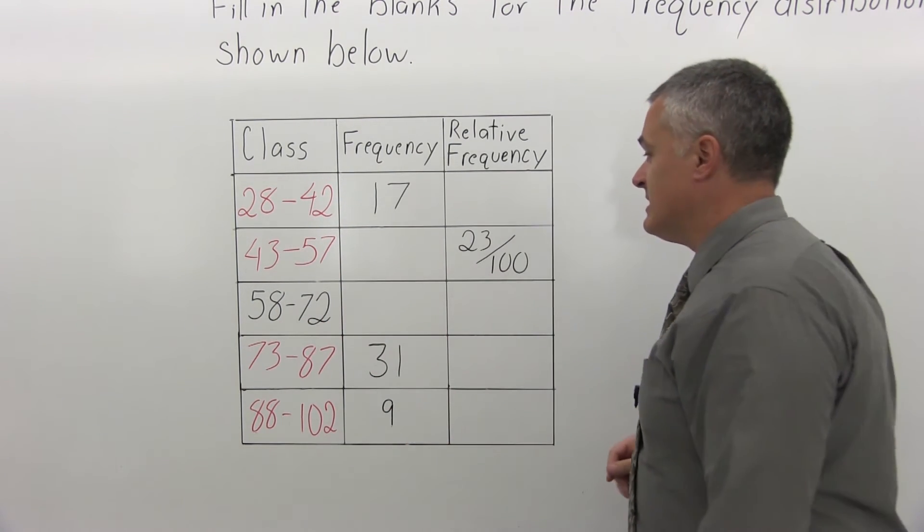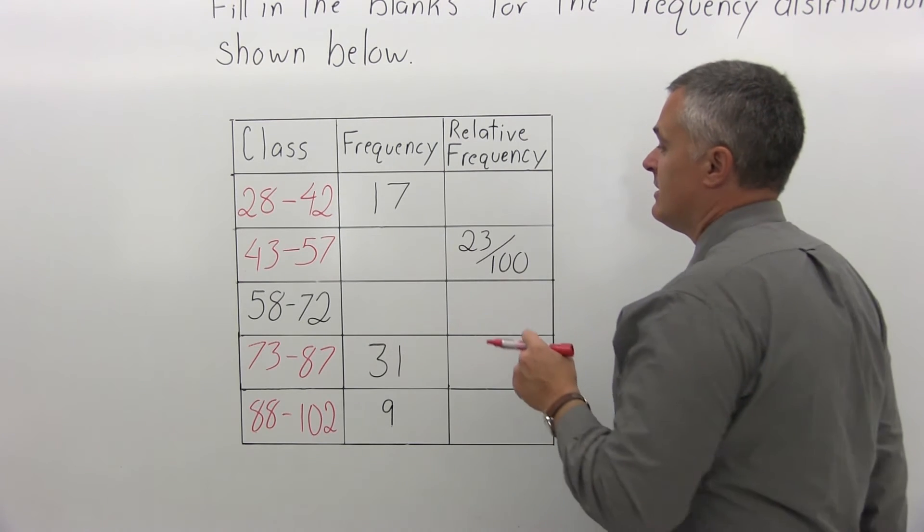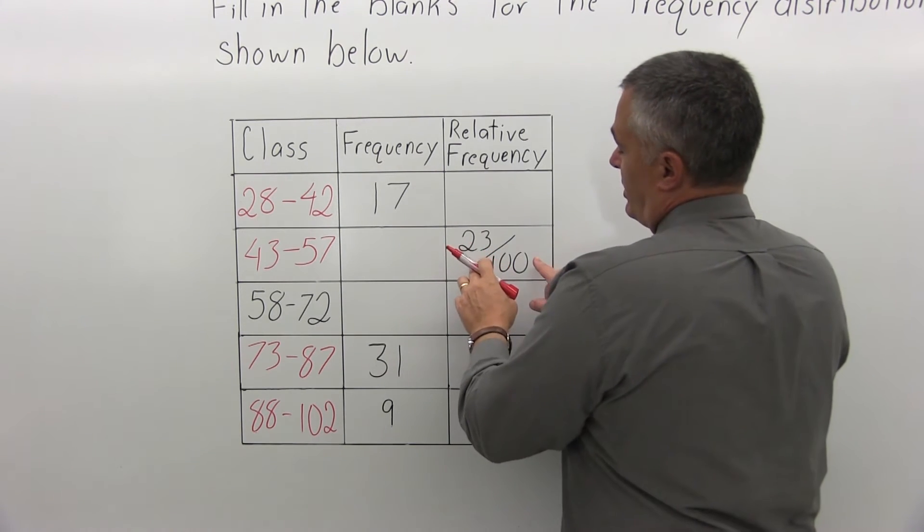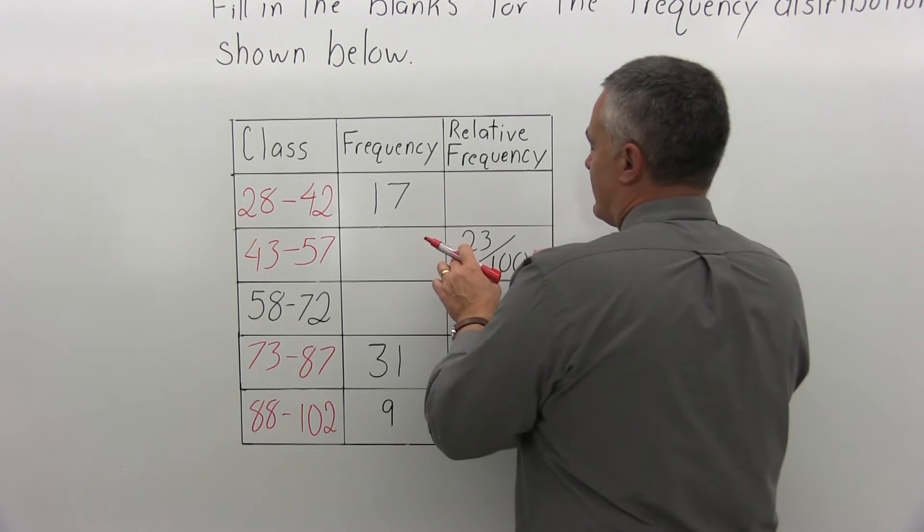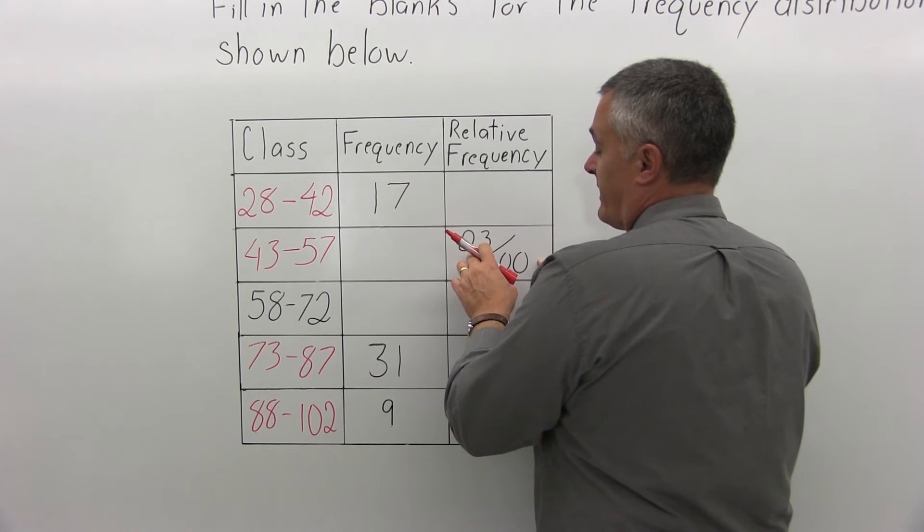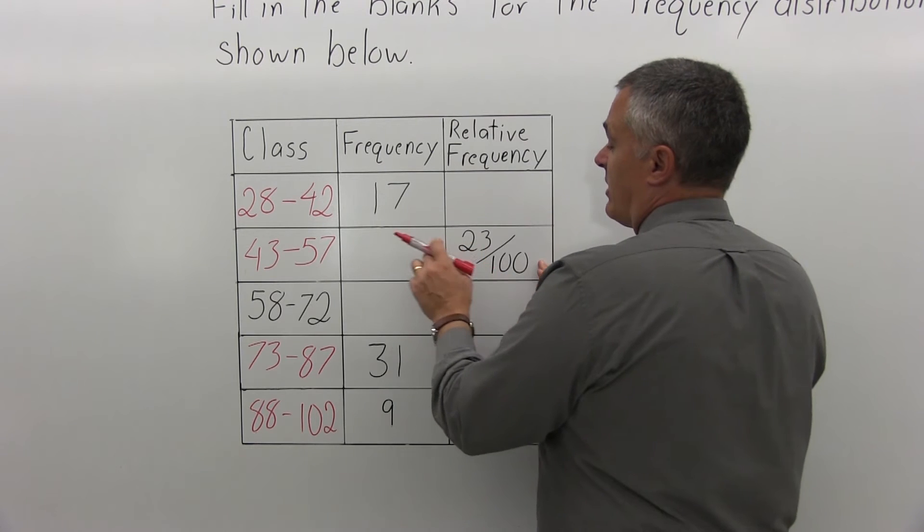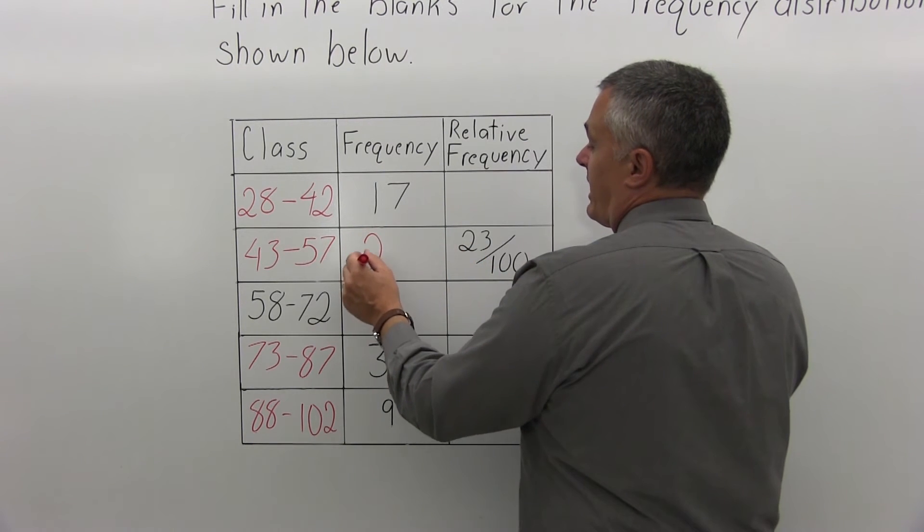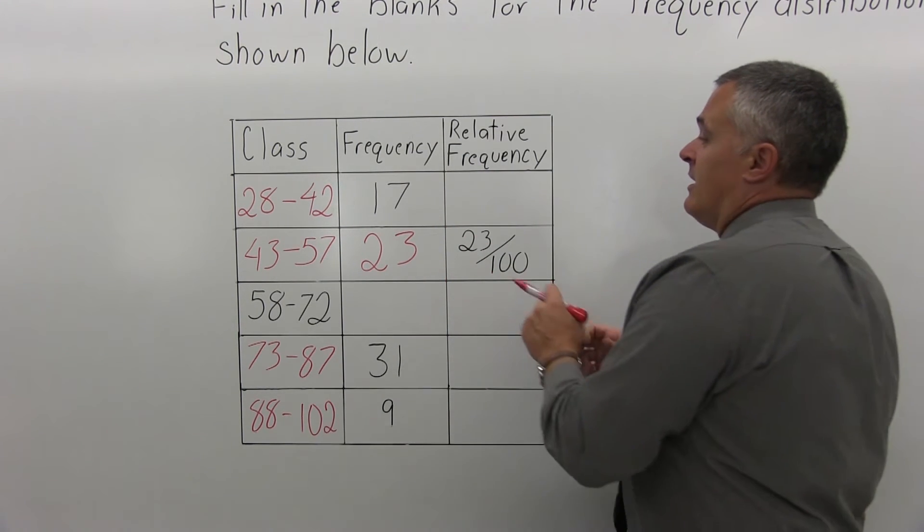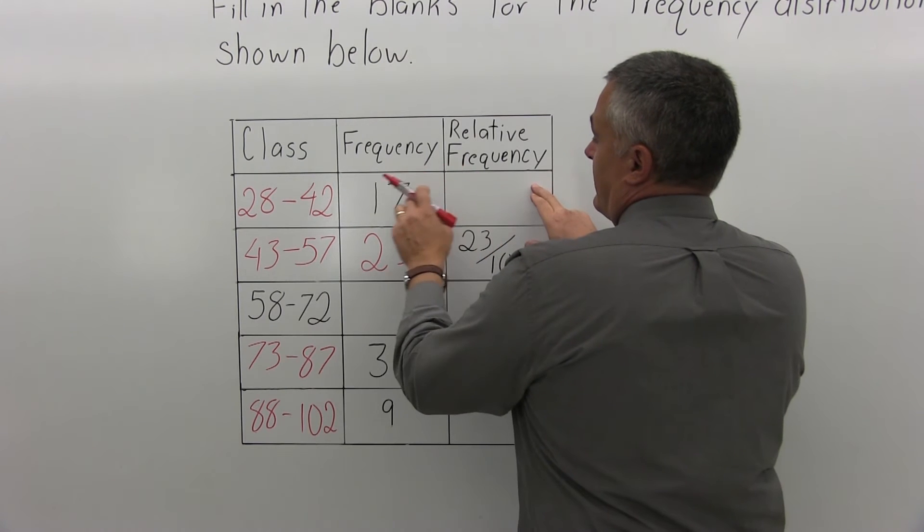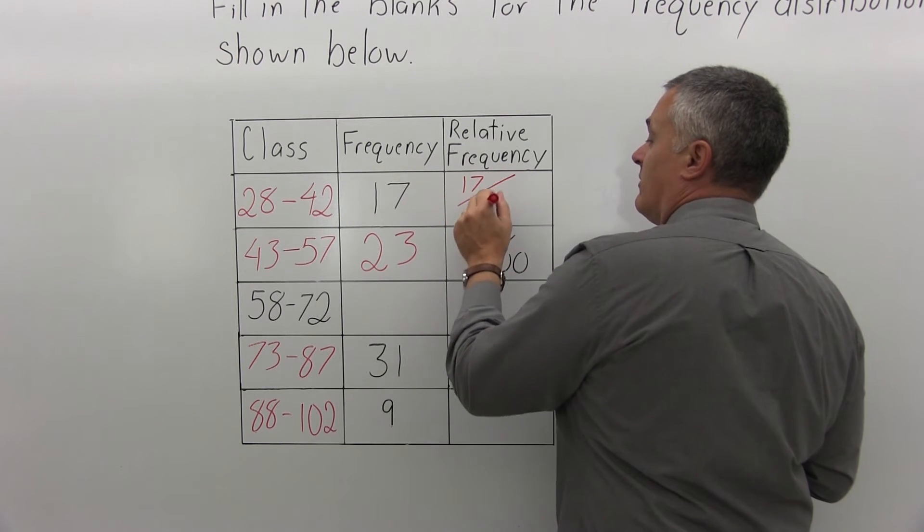Now the next column, the frequencies, I have quite a few of those. The relative frequencies are what I can work on next. I can see that there's one relative frequency given, which is 23 over 100. So what that's telling me is for the class that that's the relative frequency for, the frequency would be the numerator of that fraction, 23. And the denominator, the 100, is the total of all the frequencies. So the frequency that's next to it that's blank must have been 23. Now the first class has a frequency of 17. So its relative frequency would be the 17 for the frequency over the total of 100.